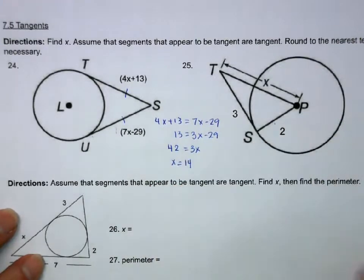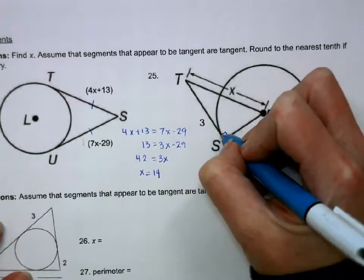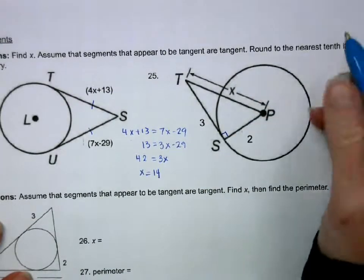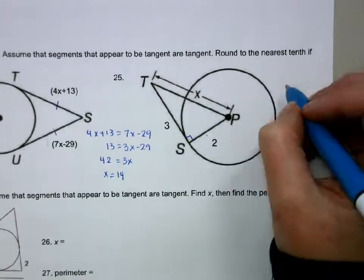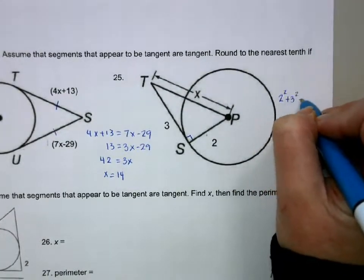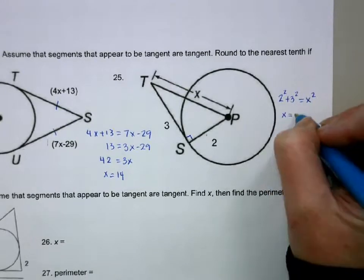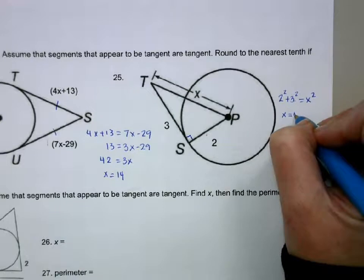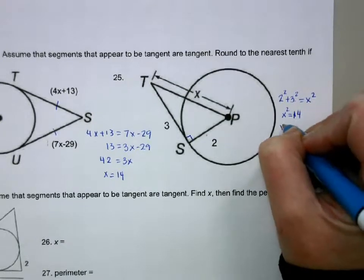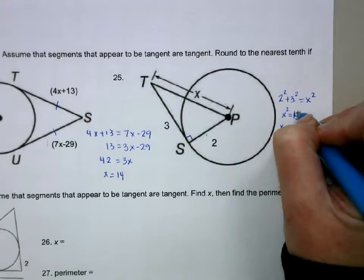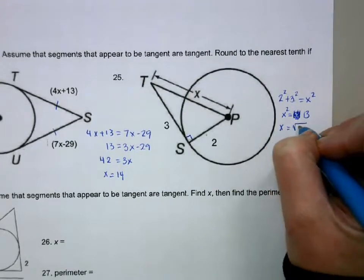Add 29 over. So this is going to be 42 equals 3X. And then divide by 3. Another property is tangent lines are perpendicular to the radius at that point. So that allows us to use the Pythagorean theorem. So this is going to be 4 plus 9 is 13. So X is going to be the square root of 13, which is 3.6.